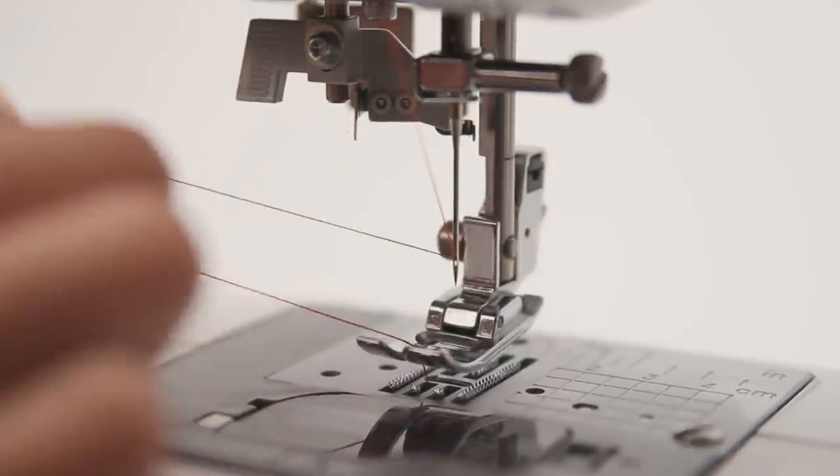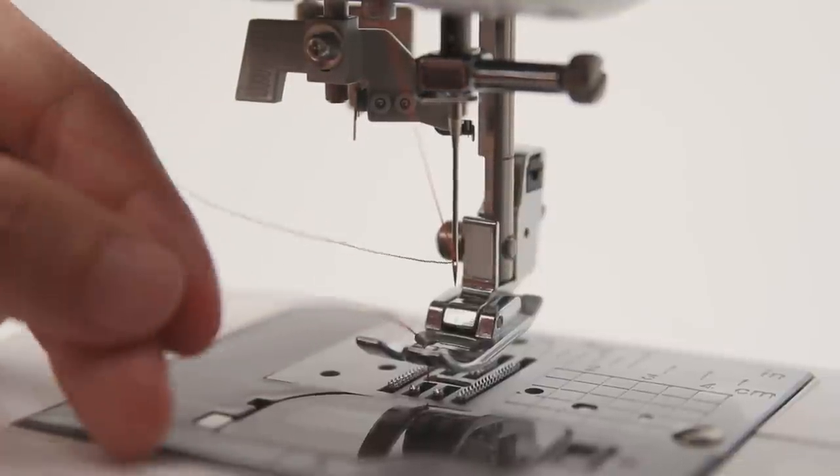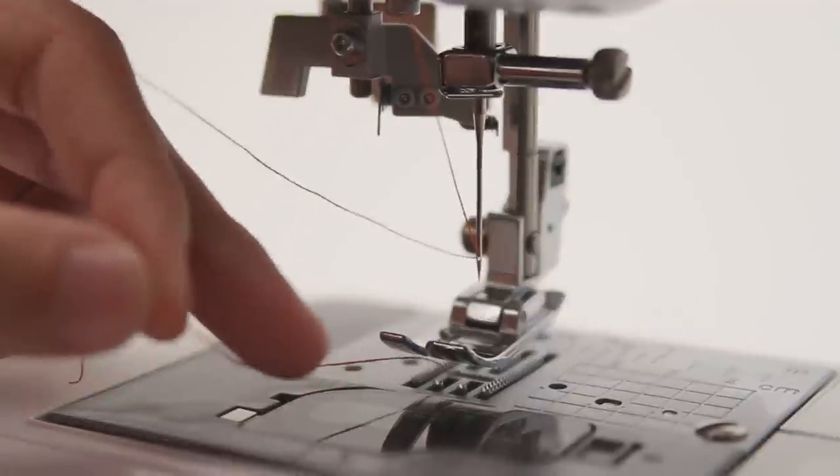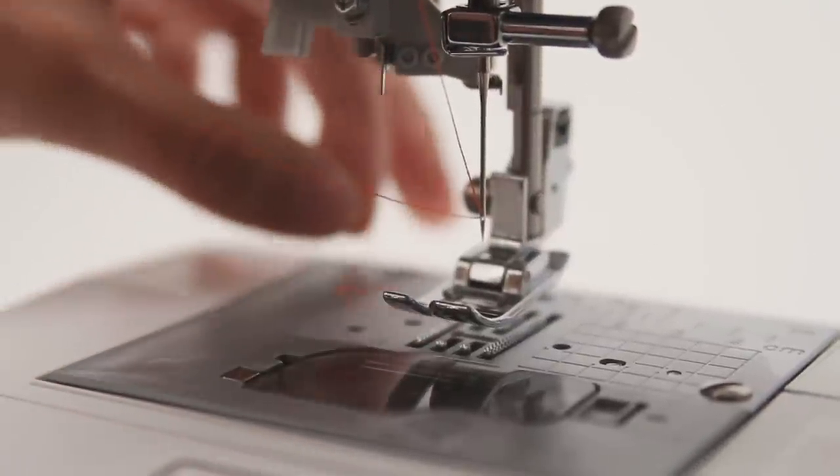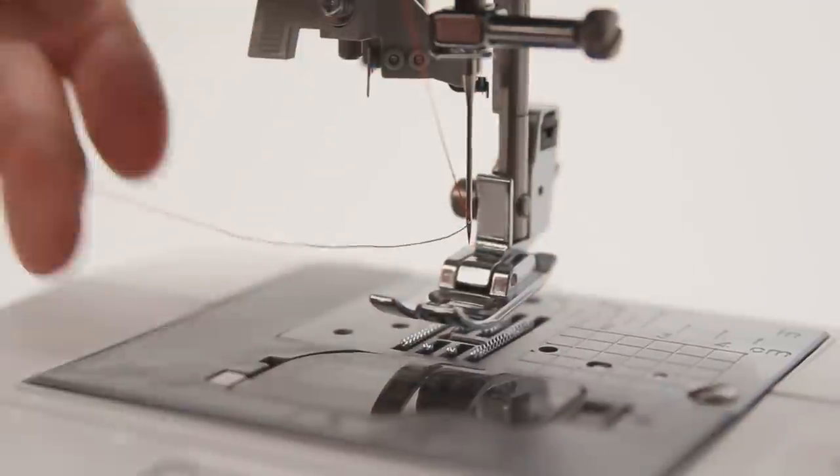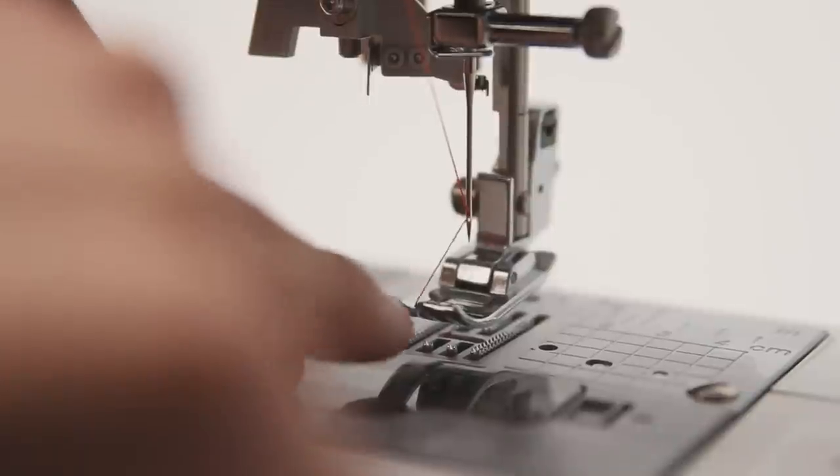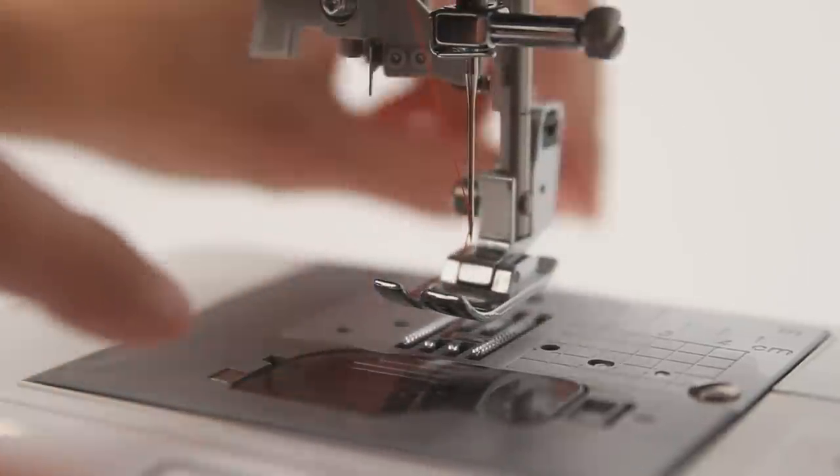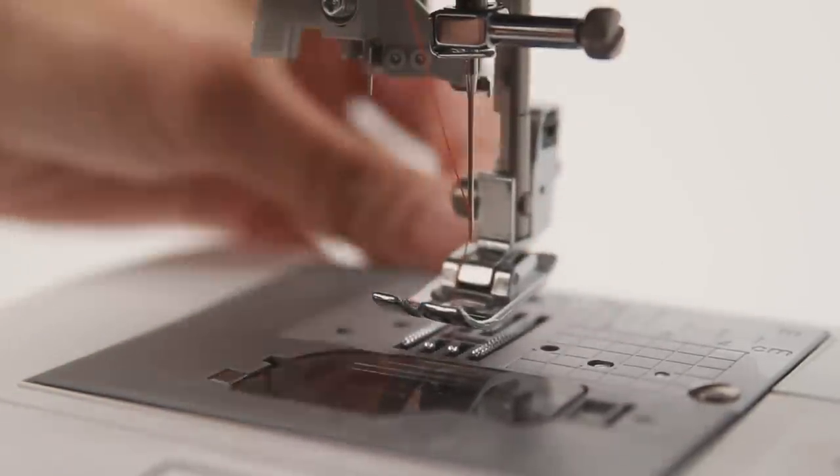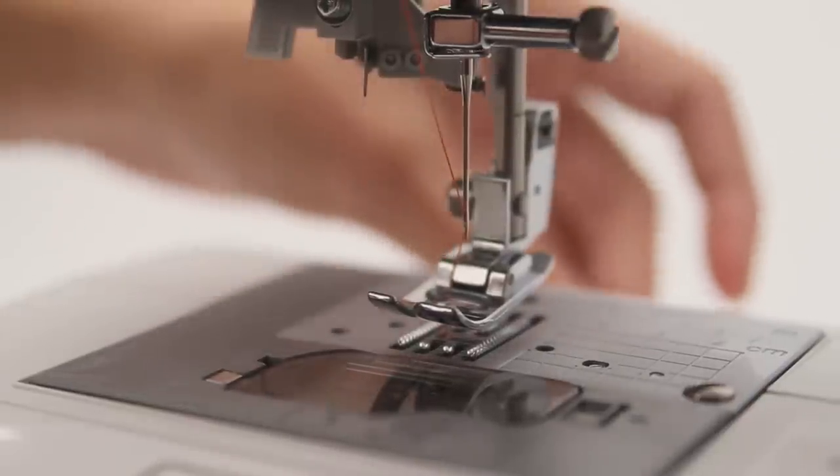You can just pull this, like this, and what you want to do is take the lower thread down here, and just get it out of the presser foot, right here, and just move it to the back. That's fine right there. And you'll take the upper thread, you'll put it inside the presser foot right here, and then move it to the back as well. So you've got two threads back here. You've got the lower and the upper thread, both moving through the back.